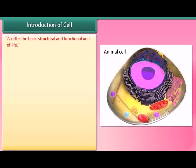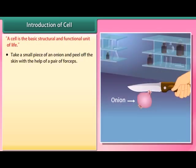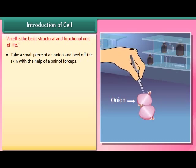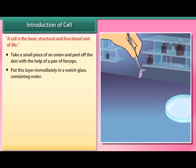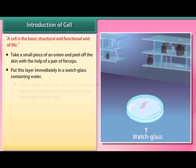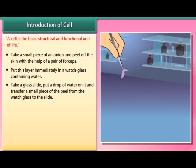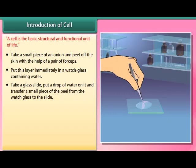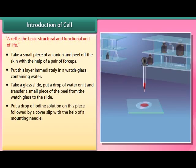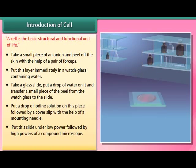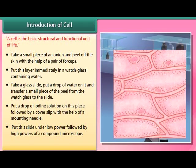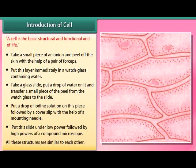A cell is the basic structural and functional unit of life. In an experiment, take a small piece of an onion and peel off the skin with forceps. Place the layer in a watch glass with water, then transfer a small piece to a glass slide with a drop of water and add a drop of iodine solution followed by a cover slip. Observe this slide under low and then high power of a compound microscope — all the structures visible are similar to each other.